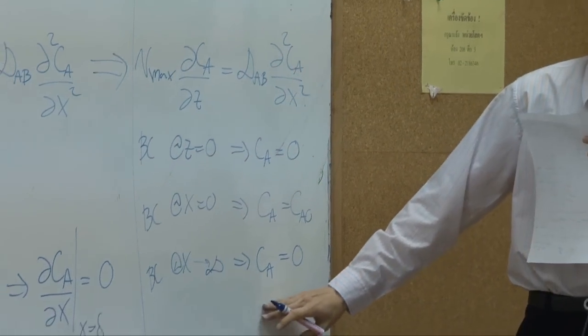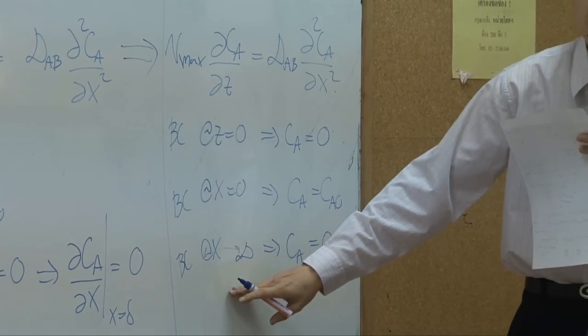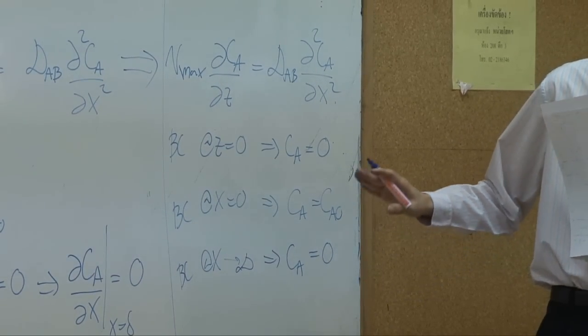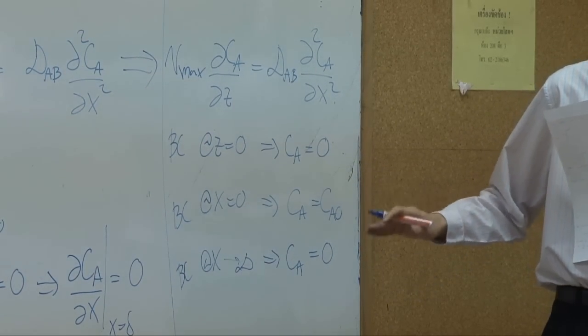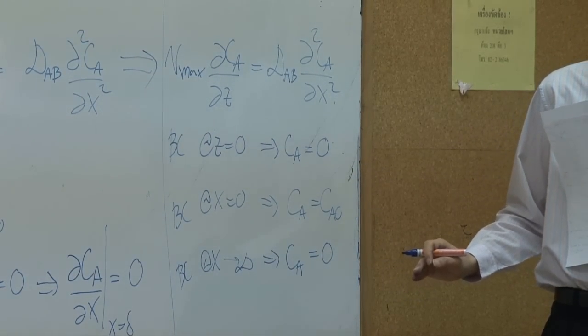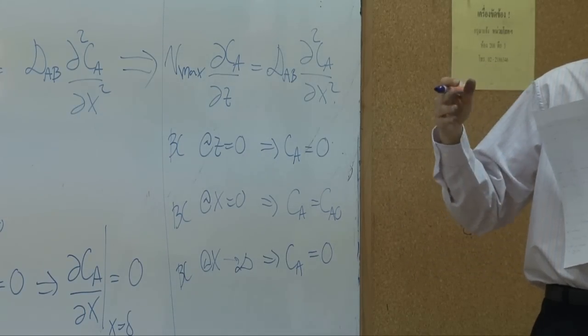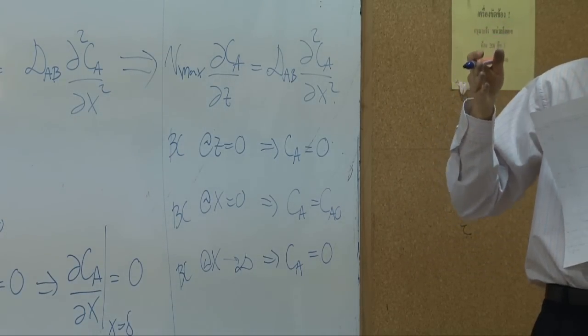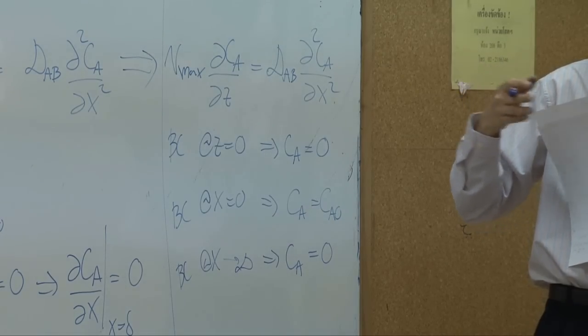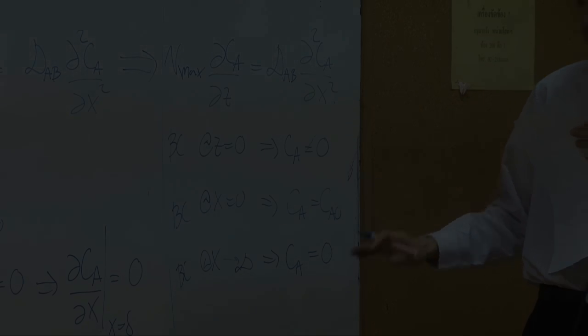What does it mean? X approaching infinite, CA equal to zero. It means that species A will never reach the wall. It seems like the wall itself is very far away from the surface. So it doesn't matter how long they are at the end. This is actually the new boundary condition.